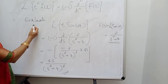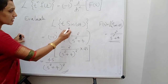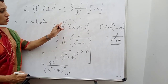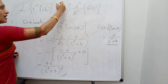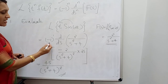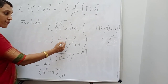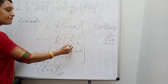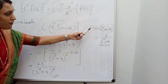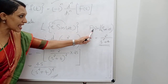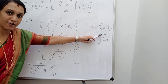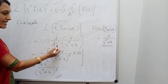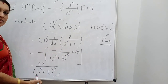Let us take the first example: evaluate L{t·sin(2t)}. Here sin(2t) is multiplied by t, so we use the multiplication formula. The value of n is 1. Substituting into the formula: (-1)^1 · d/ds of F(s). What is F(s)? It is L{sin(2t)}, which equals 2/(s²+4). So it becomes d/ds of 2/(s²+4).